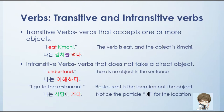Let's also tackle transitive and intransitive verbs. Transitive verbs are verbs that accept one or more objects. For example, 'I eat kimchi.' The verb is eat and the object is kimchi. So in Korean: nanun, kimchi rul, mokda. The rule particle is placed on kimchi, and nanun goes on na.